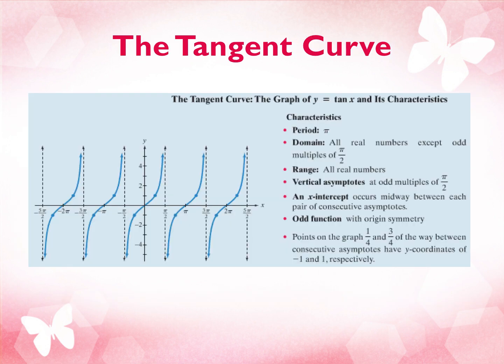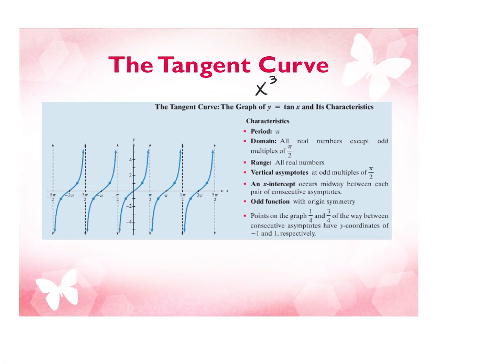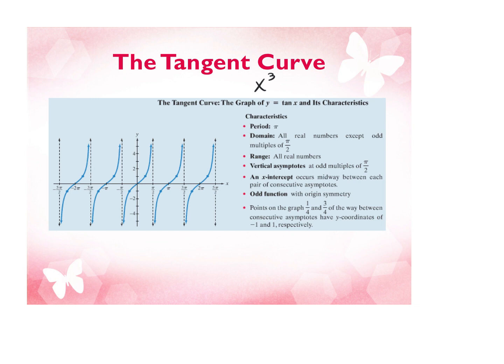For the tangent curve, the tangent graph is going to take on the shape of the x-cubed graph. If there's no amplitude, it'll take on that shape. If there is an amplitude and it's negative, the negative tangent curve will take on a negative x-cubed graph, going in the opposite direction — like a reflection.